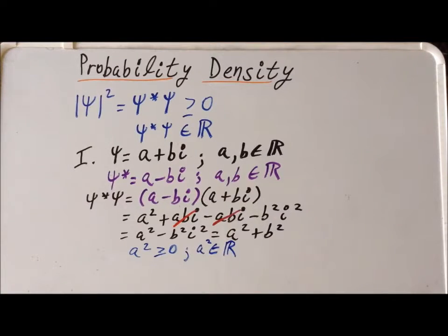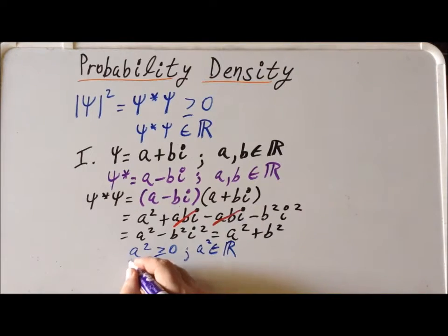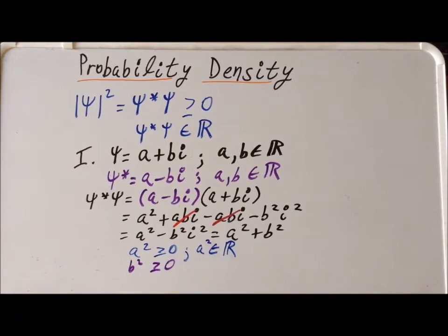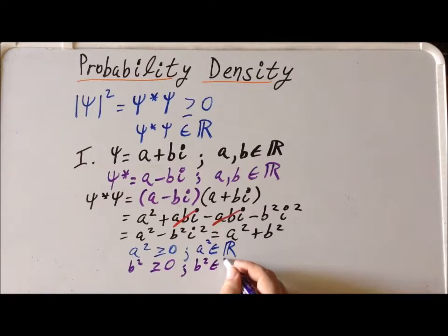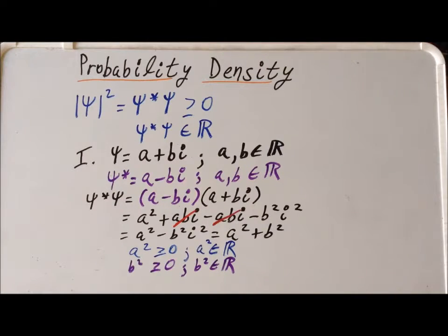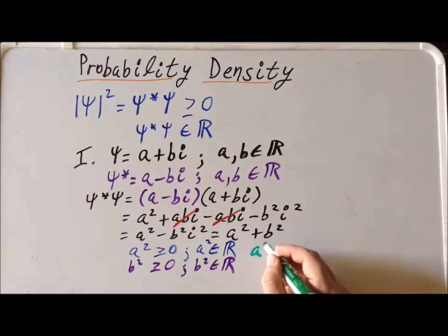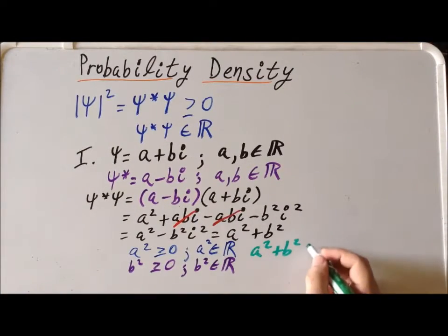Using exactly the same reasoning for b: if we square b, b squared also has to be greater than or equal to zero — it's a non-negative number. And similarly, if we take a real number b and multiply it times another real number b, the product b squared has to be a real number, because the real numbers are closed under multiplication. Since a squared and b squared are each real non-negative numbers, their sum a squared plus b squared also has to be greater than or equal to zero, and it has to be a real number.